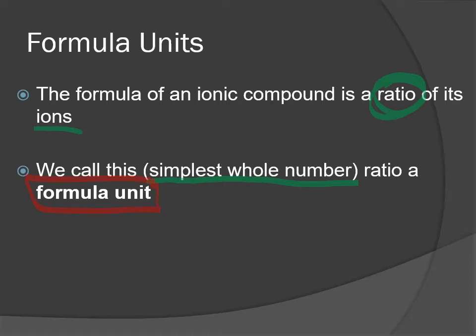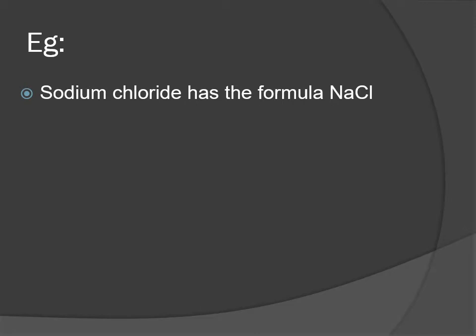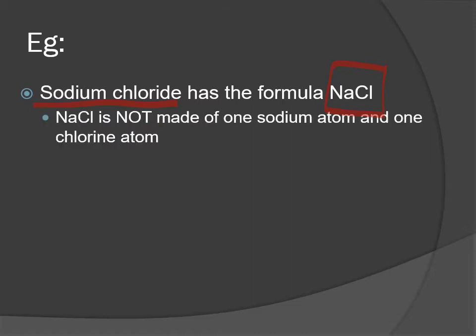That's the key point about ionic compounds: when we're talking about them, we use their chemical formula, which is a formula unit. So for example, sodium chloride—common table salt—we know has the chemical formula NaCl. The formula unit for sodium chloride is NaCl.